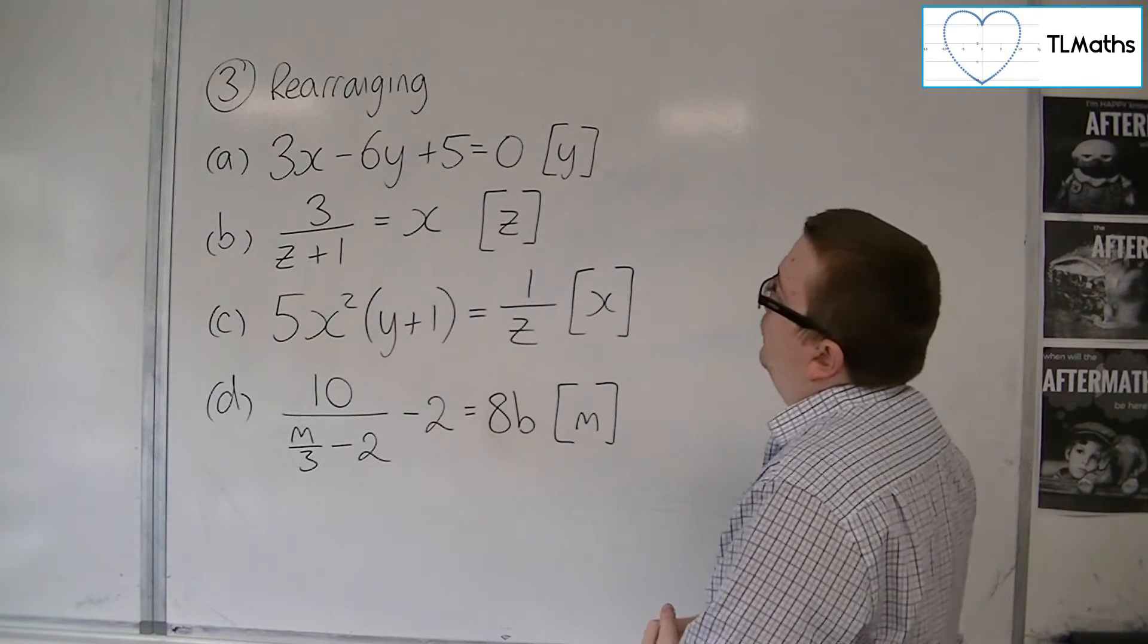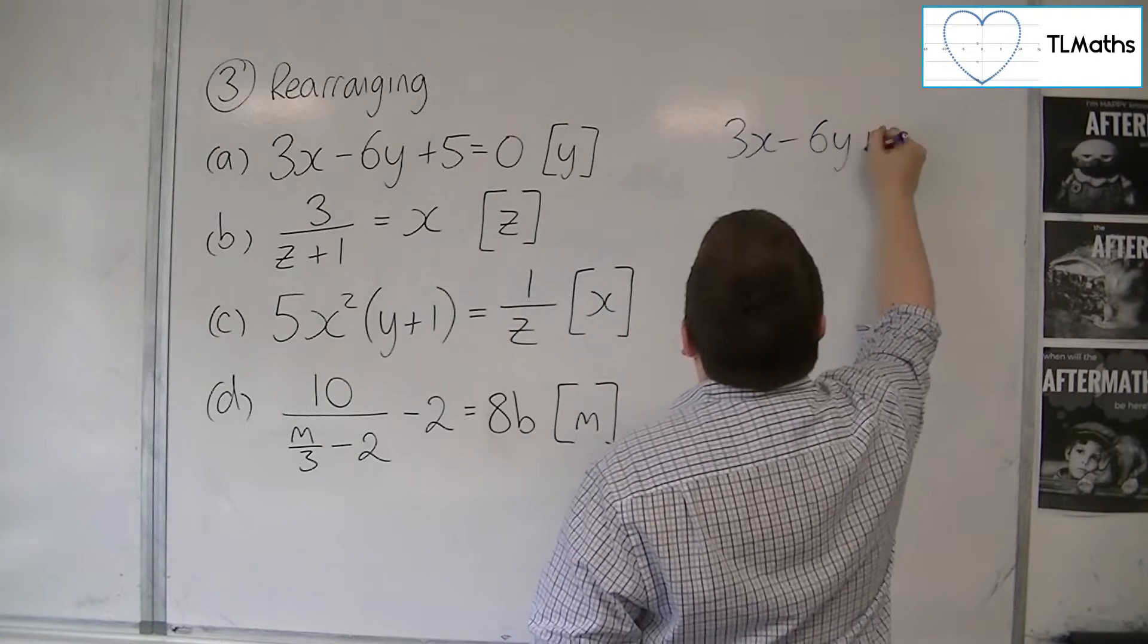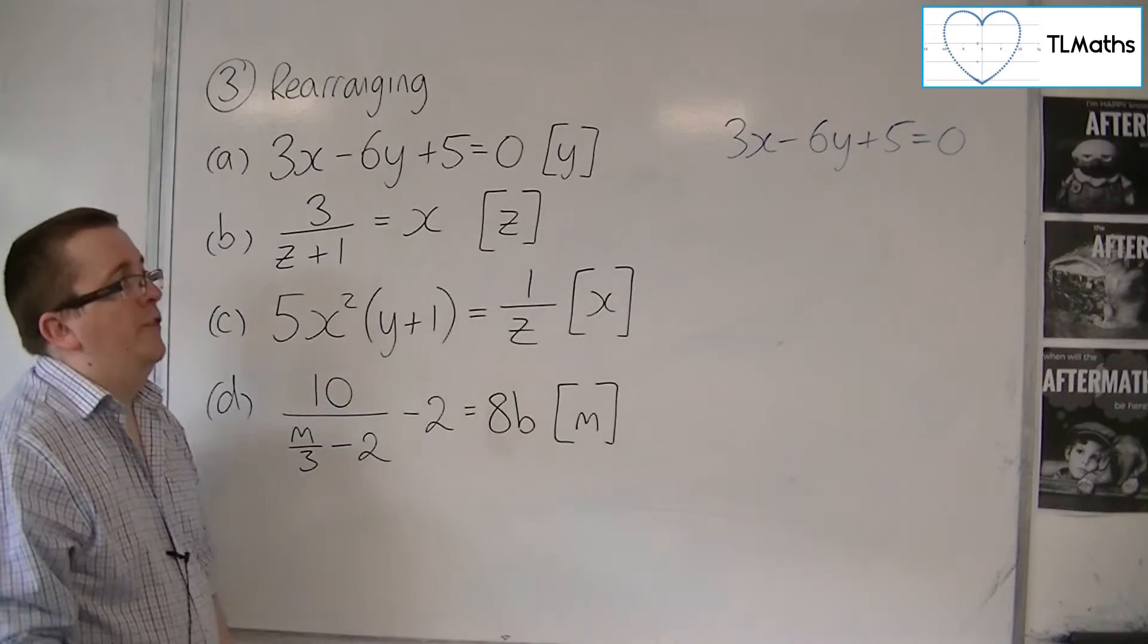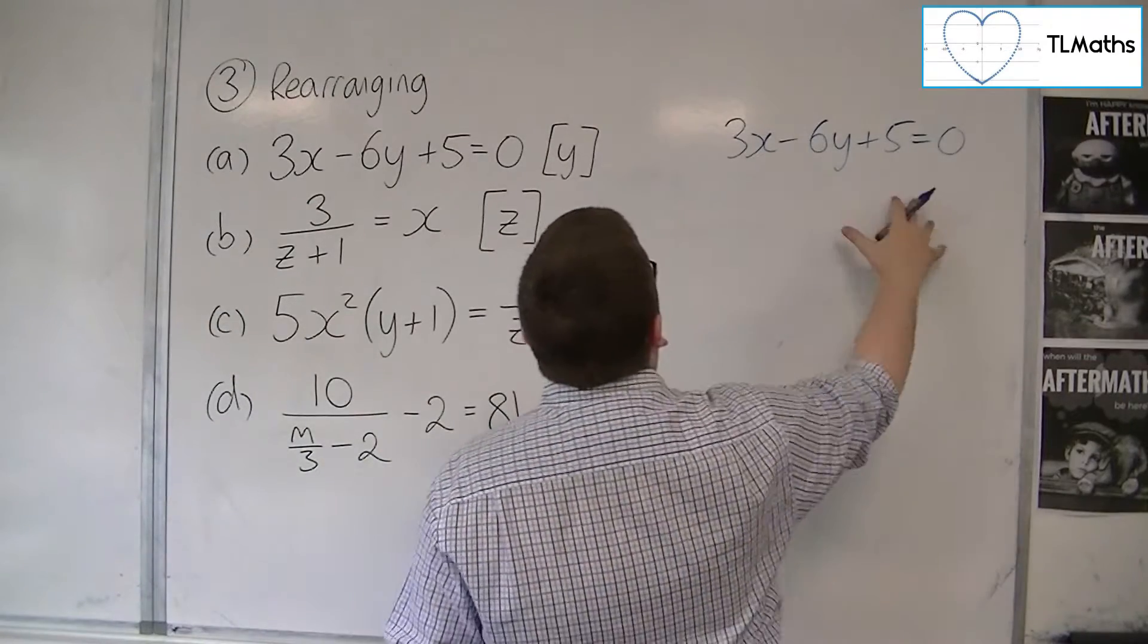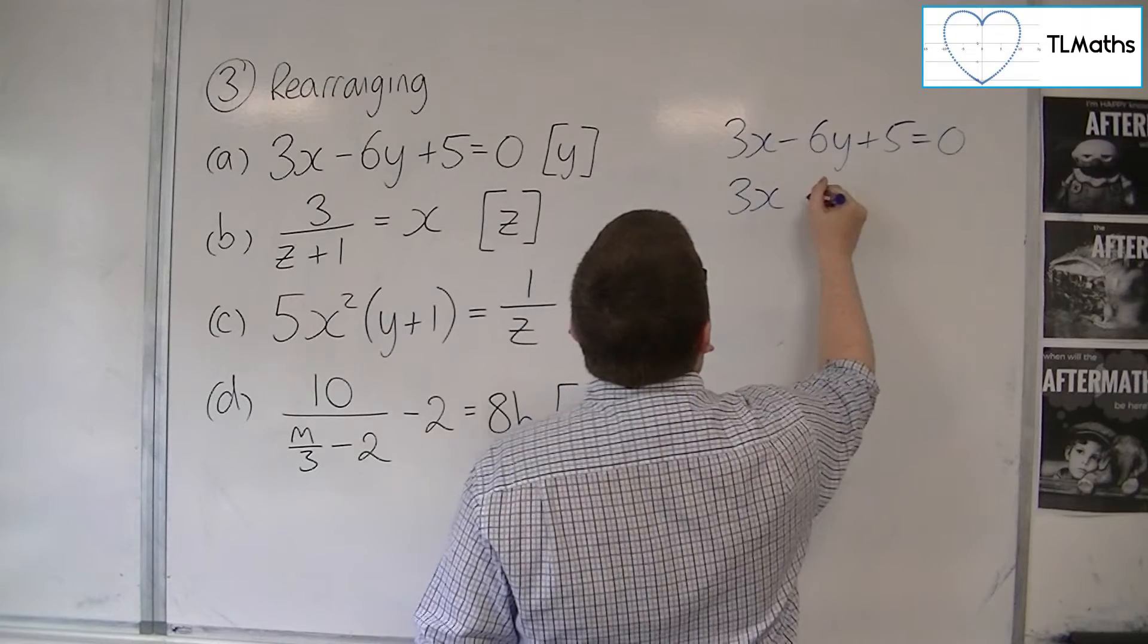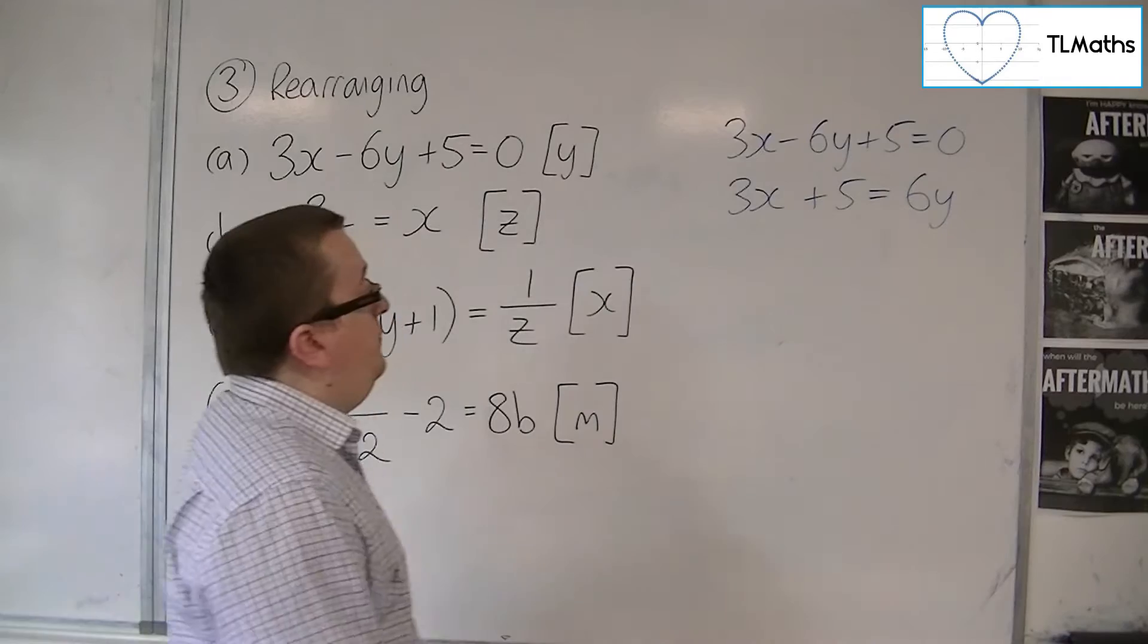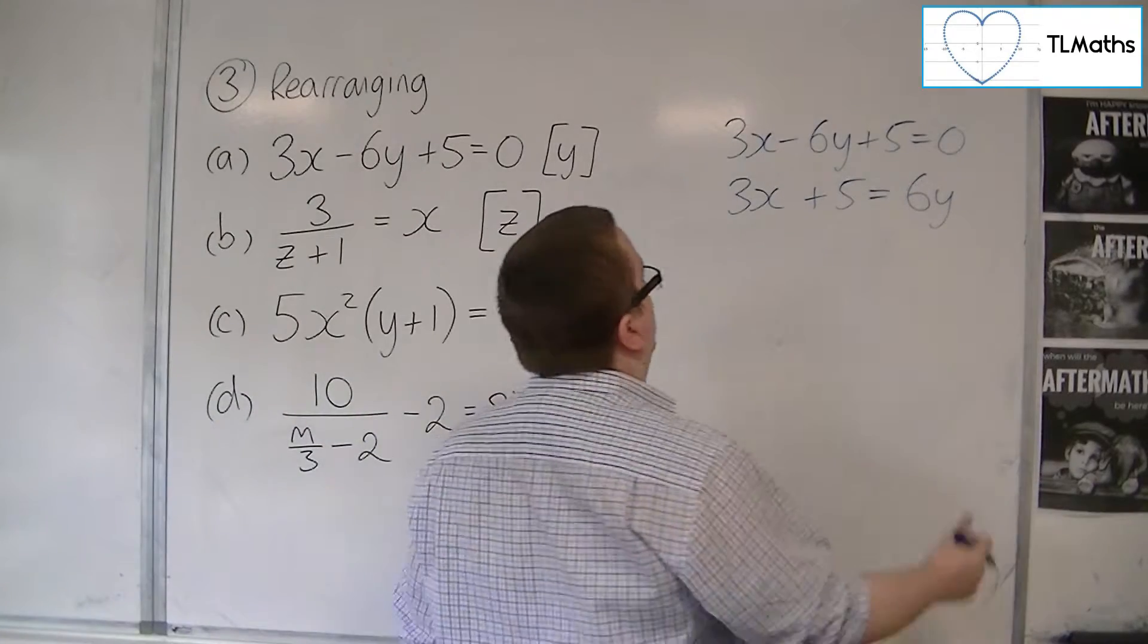So 3X minus 6Y plus 5 equals 0. To get Y by itself, the first step that I would suggest is to add 6Y to both sides. So I would have 3X plus 5 is equal to 6Y. And then you're one step away because you can then divide everything by 6.